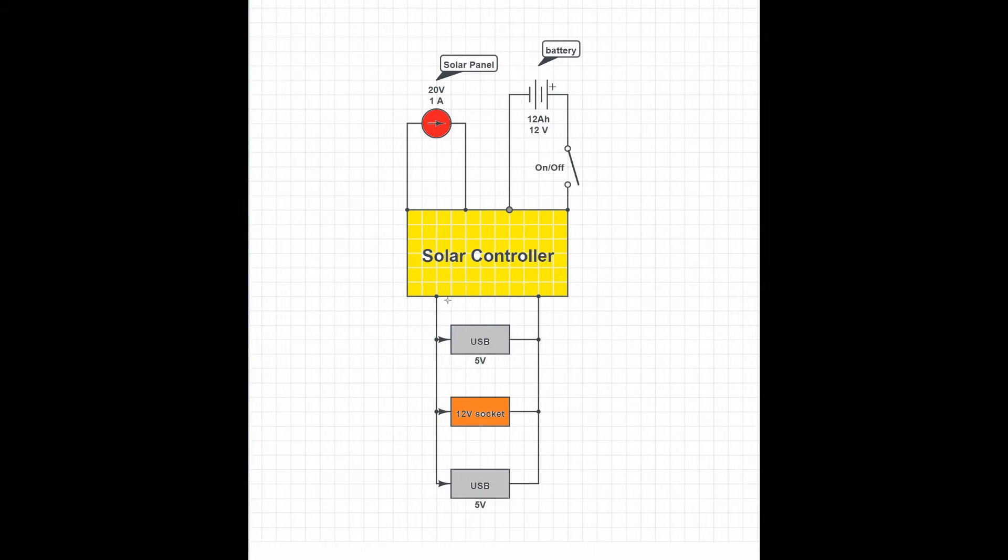The output is the load. Now, you could have anything. I have USB sockets and a 12-volt socket. I've got four USB sockets and a 12-volt socket, along with the two USB sockets on the solar controller. So, that is plenty.